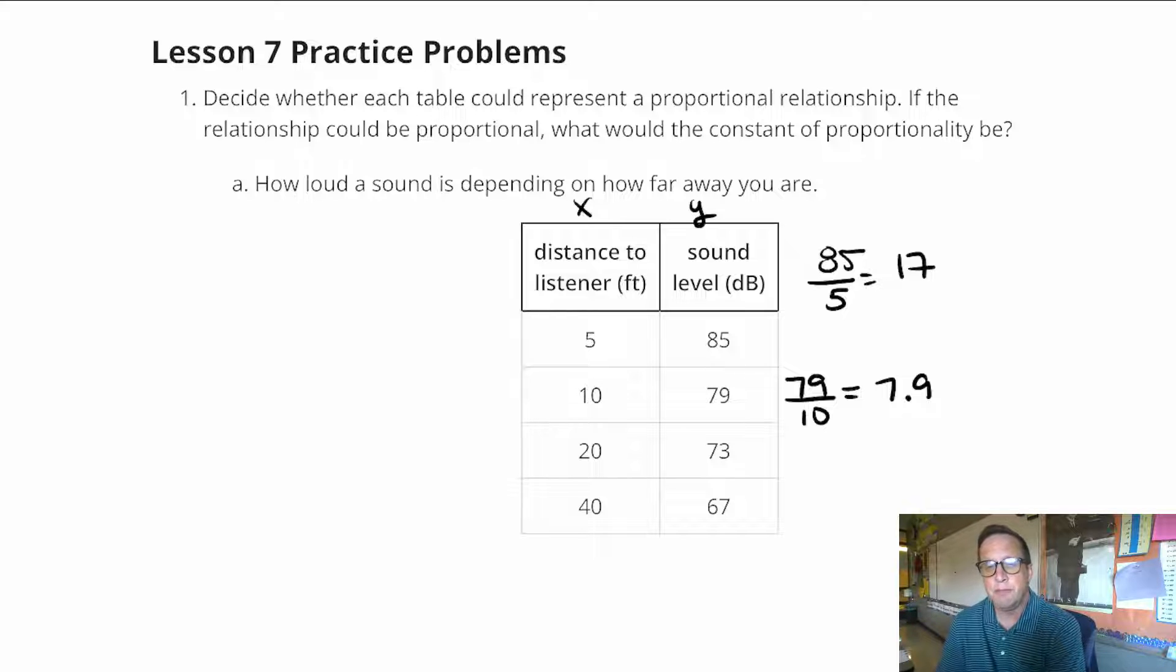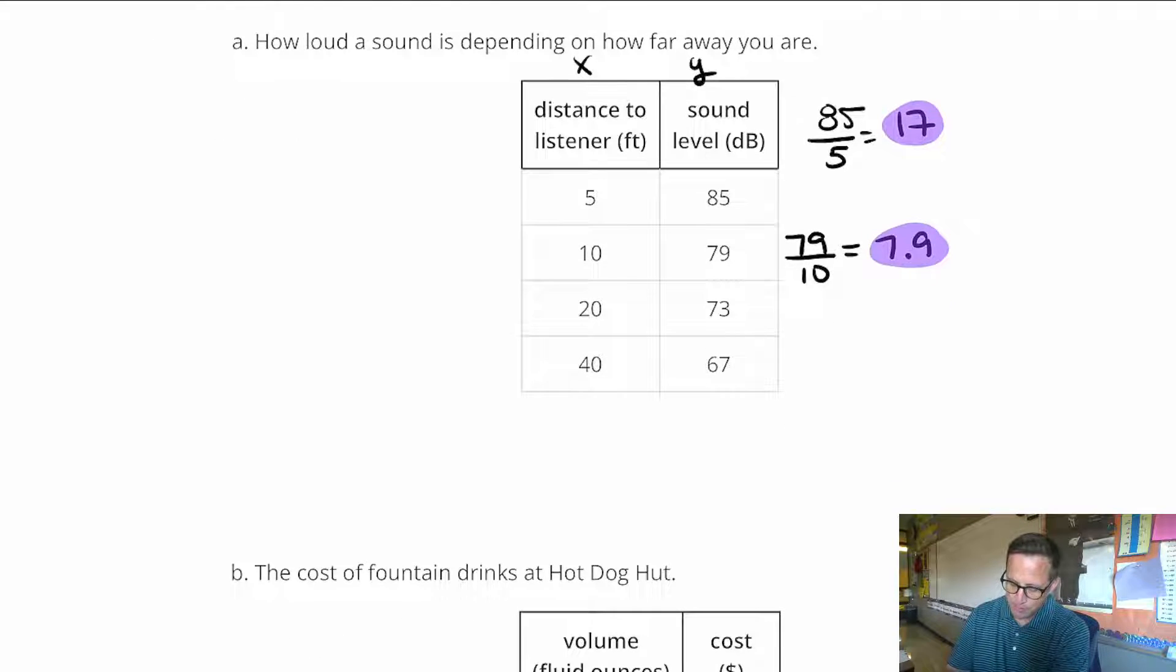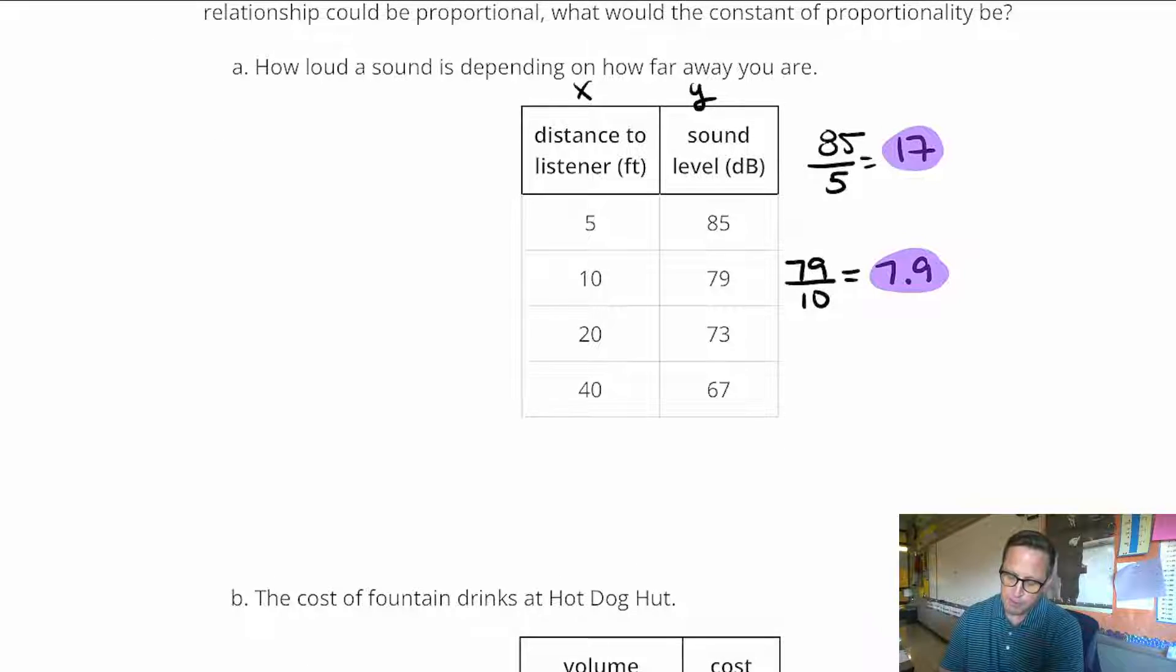I could divide the rest there, but it really doesn't matter. We can tell right now that these values are not the same. Constant proportionality has the word constant in it, meaning that you want to have the same value every time. And if we are getting different values, then this is not indeed proportional.